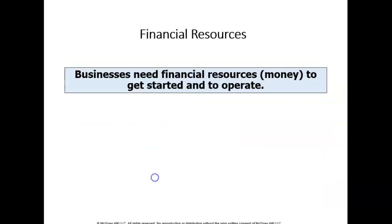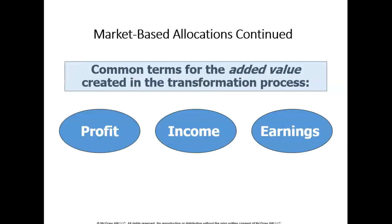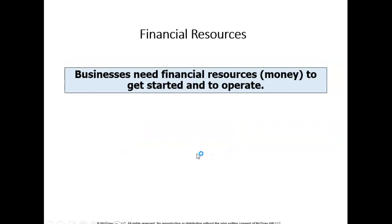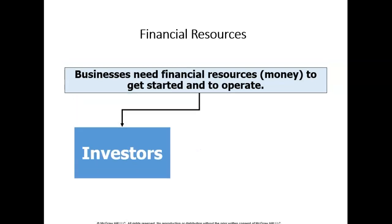There are common terms used in market-based allocation: profit, income, and earnings. We're going to define these different terms. Make sure you understand — is profit the same as income? Is income the same as earnings? We'll talk about these terms in more detail.